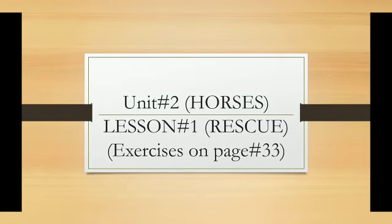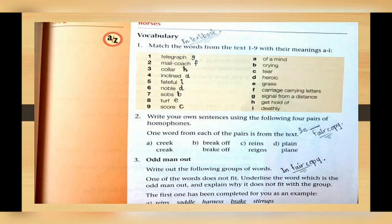Assalamu alaikum grade 8, today we will do exercises of lesson 1 Rescue on page number 33. The first exercise is vocabulary: match the words from text 1 to 9 with their meanings a to i. So there are total nine words given. We have to match these nine words with their meanings. I have written the number of meaning in front of each word.